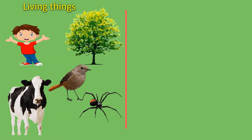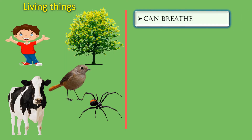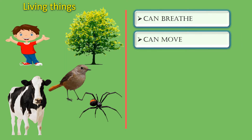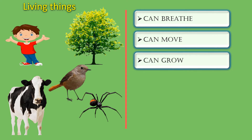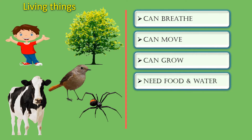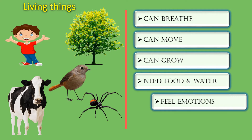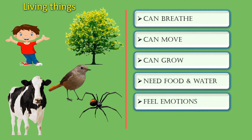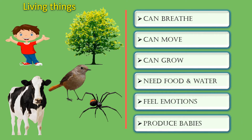What are living things? Living things can breathe. They can move. They can grow. They need food and water. They feel emotions. And they produce babies. Let us see all these characteristics in detail.